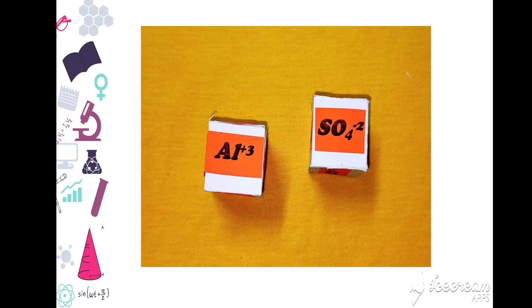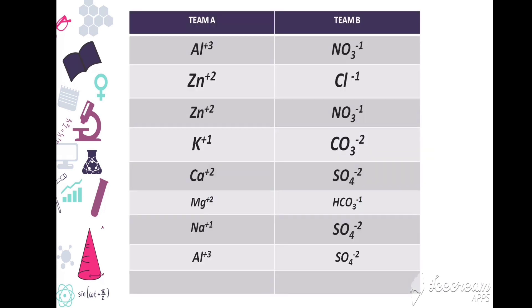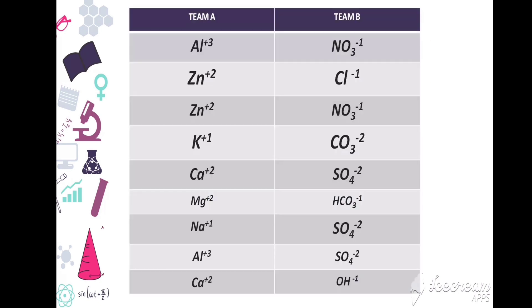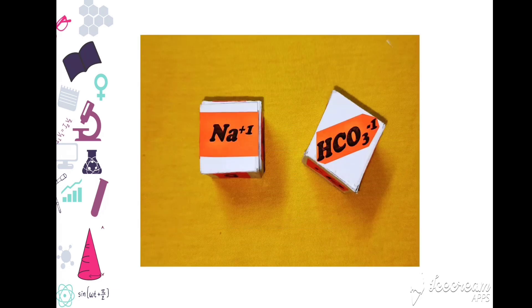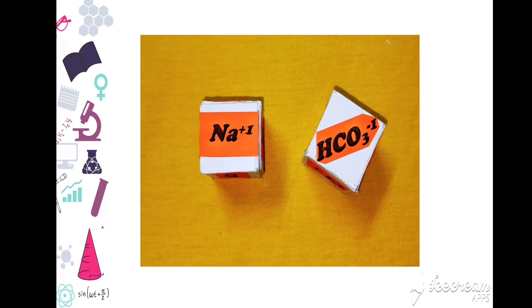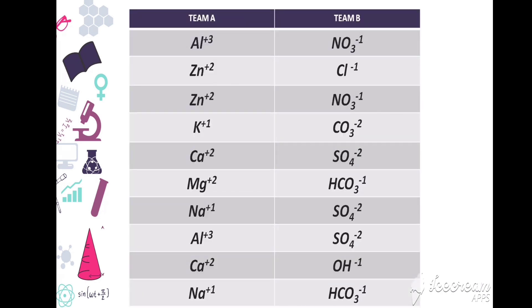Next chance: Al plus 3, SO4 minus 2. Noted in the table by both teams. Next chance: Ca plus 2, OH minus 1. Noted in the table by both teams. Next: Na plus 1, HCO3 minus 1. Noted in the table by both teams.